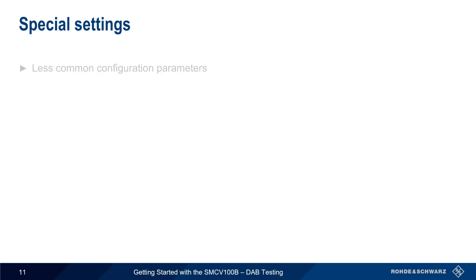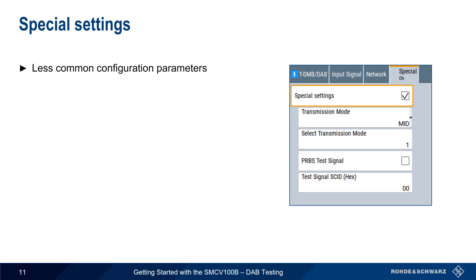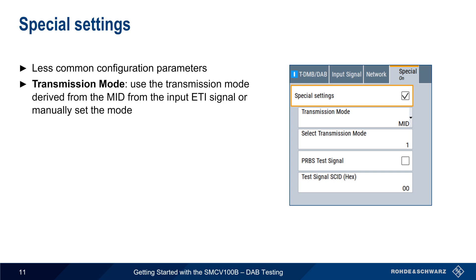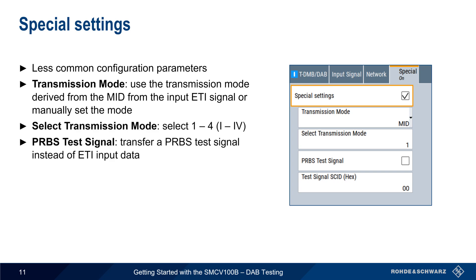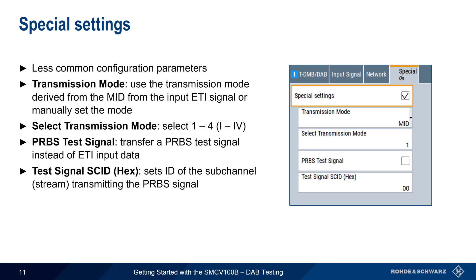The last tab is Special Settings, which, as the name implies, are used for less common or non-standard parameters. The transmission mode — that is, the set of OFDM and framing parameters — is derived from the MID of the ETI signal by default, but can also be manually selected. PRBS test signal transfers a PRBS signal instead of using the input ETI data, and test signal SCID is used to set the sub-channel or stream ID containing this PRBS signal.